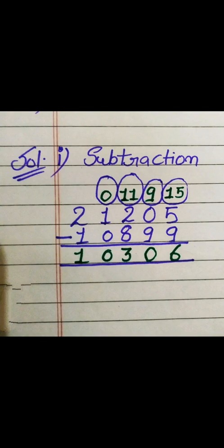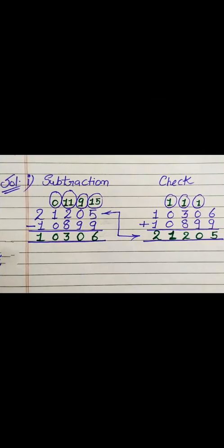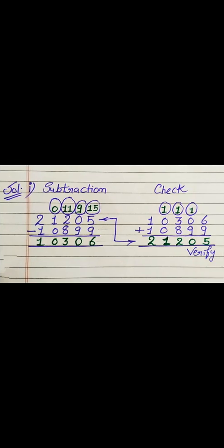Now we have to check the correctness of this subtraction by adding the difference and the subtrahend. After addition, if we get the same value as the minuend, that means our subtraction is correct. As you are seeing, both values are the same, so our subtraction is correct.